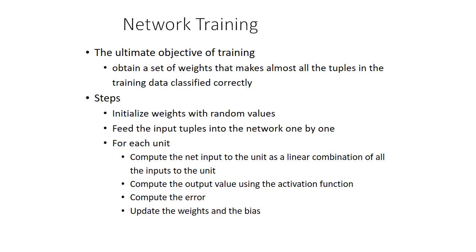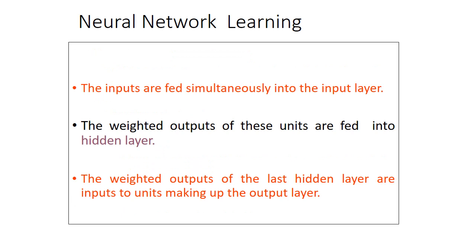For each unit, compute the net input as a linear combination of all inputs to that unit — after applying the weights and input values we compute this linear combination. Then we apply an activation function; there are different types which we will see in the next class. Next, compute the error. If there is some error, go back and train the model with different weight values, then update the weights and the bias.